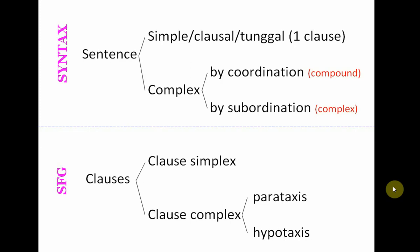This corresponds with the clauses in functional grammar. The simple sentence is the same as the clause simplex in functional grammar, meaning there is only one subject and one verb. The clause complex is divided into two: the parataxis and the hypotaxis. In functional grammar, parataxis is basically the compound sentence in traditional grammar, and hypotaxis is the complex sentence.